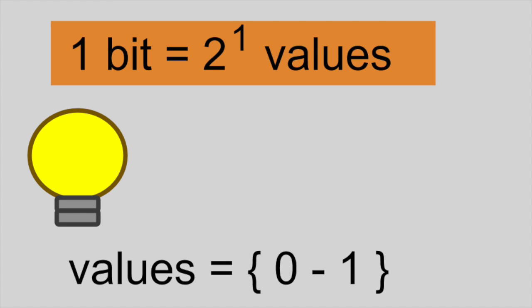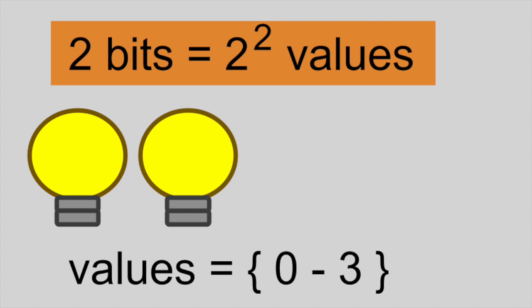Let's start with 1 bit. As we know from our definition of a bit, a single bit can represent a total of 2 different values, 0 or 1. With 2 bits, we can represent 4 different values, namely 0 through 3.